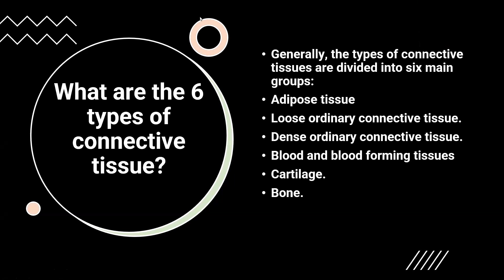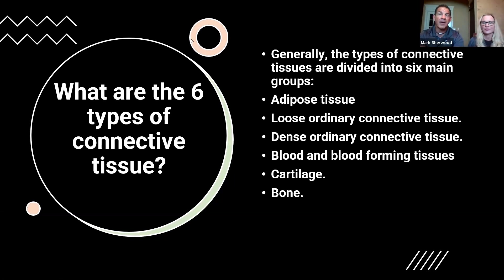At the top of the list, we're going to talk about loose ordinary connective tissue, adipose tissue — we all know there's plenty of fluff around — blood and blood-forming tissues, dense ordinary connective tissue, cartilage, and then bones. Who would have thought that blood would be a connective tissue? But the bottom line is it really is.